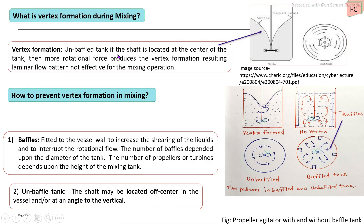During mixing, if a turbine or propeller type element is fitted at the center of the mixing tank without baffles, only rotational flow develops and a vortex is formed, which negatively affects the mixing process. To prevent vortex formation, two provisions are used: first, fitting internal baffles — a minimum of four baffles depending on tank diameter — which disrupts the rotational flow and converts it into longitudinal and radial flow patterns; second, in an unbaffled tank, the mixing element can be fitted off-center or in an inclined position to prevent vortex formation.